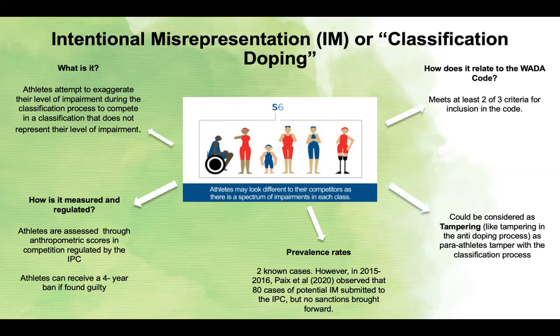So how does intentional misrepresentation relate to the WADA code? It meets two of the three criteria for inclusion within the code, and it can be considered as tampering. So, like tampering of the anti-doping process — which is an anti-doping rule violation — para-athletes tamper with the classification process.